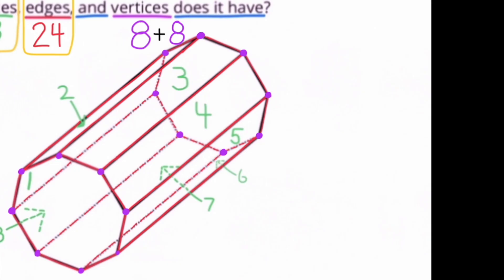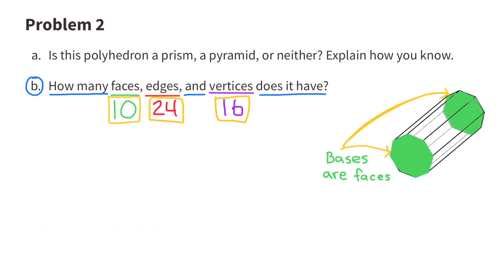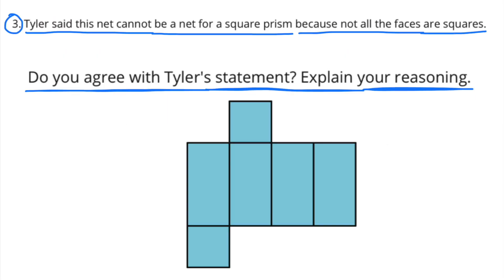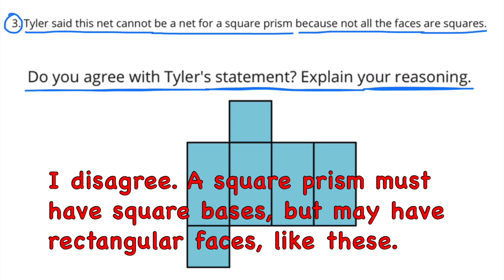Number 3: Tyler said this net cannot be a net for a square prism because not all the faces are squares. Do you agree with Tyler's statement? Explain your reasoning. I think that Tyler must be thinking of a cube. If all the faces were squares, then this net would form a cube. I disagree. A square prism must have square bases but may have rectangular faces like these.